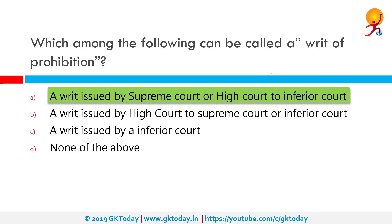Which among the following can be called a writ of prohibition? The correct answer is a writ issued by the Supreme Court or High Court to an inferior court. A writ of prohibition means that a higher court like the Supreme Court or High Court may prohibit lower courts — such as special tribunals, magistrates, and commissions — from acting beyond their jurisdiction or contrary to the rules of natural justice. For example, if a judicial officer has a personal interest in a case, it may hamper the course of natural justice.